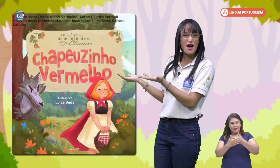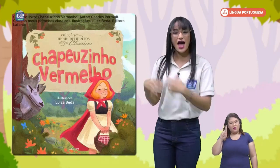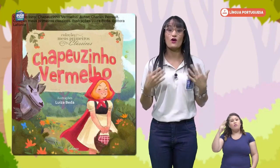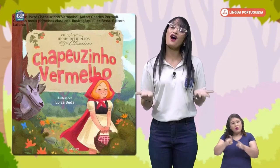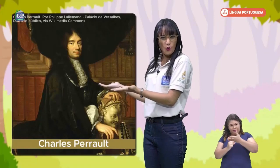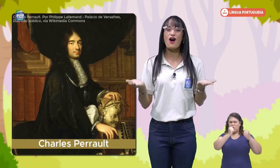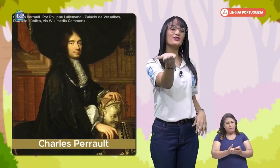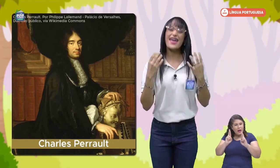A nossa historinha é Chapeuzinho Vermelho. Já leram alguma vez essa historinha? A Chapeuzinho Vermelho é o nome da nossa historinha de hoje. Então, agora, crianças, vamos desvendar, vamos investigar qual é o autor desta linda obra. Quem é o autor? É o Charles Perrault. Este é o autor da obra que nós iremos estudar e contemplar na nossa aula de hoje. Eu convido vocês para o momento mais esperado: a nossa hora da historinha.